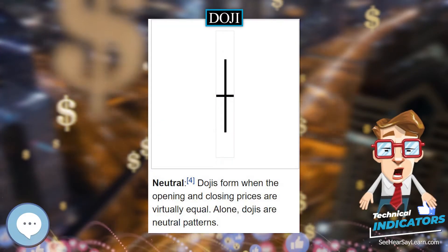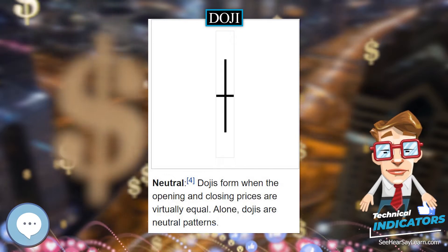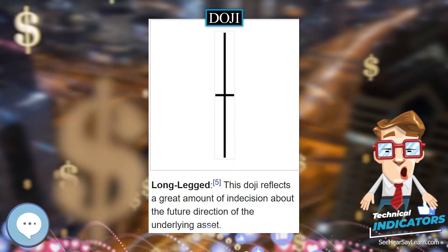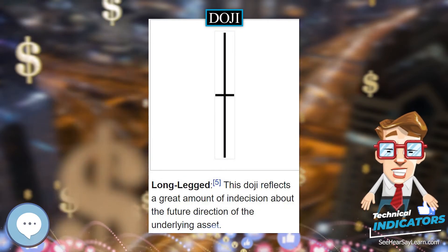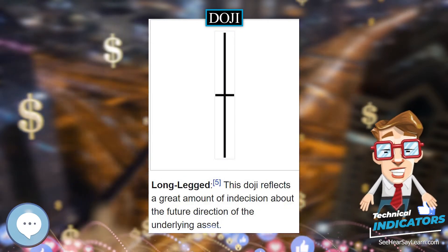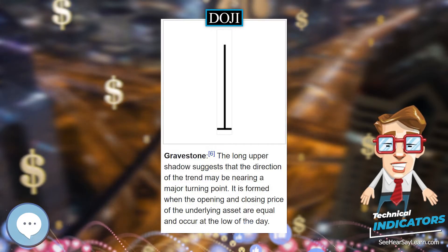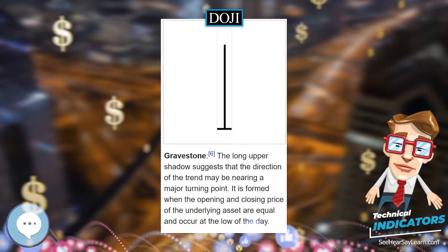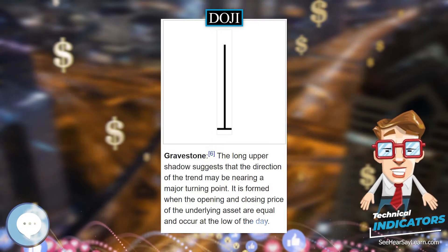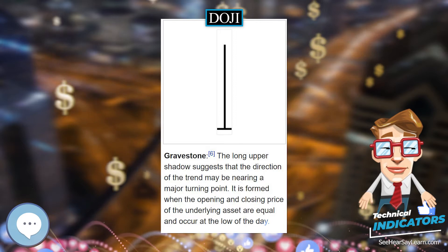The Doji is a commonly found pattern in a candlestick chart of financially traded assets — stocks, bonds, futures, etc. — in technical analysis.